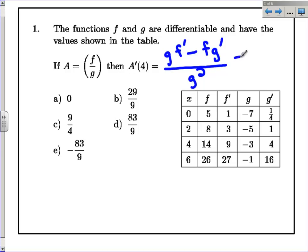So let's see if we can't plug them in. We want to evaluate all these at 4, so we're going to look at this row right here. So g of 4 is negative 3 times f prime of 4 is 9 minus, and then f of 4 is 14 times g prime of 4 is 4 all over the bottom squared. Negative 3 squared, of course, is positive 9.